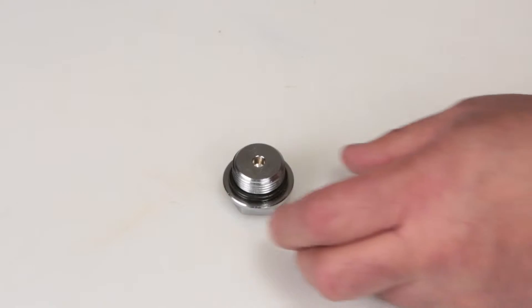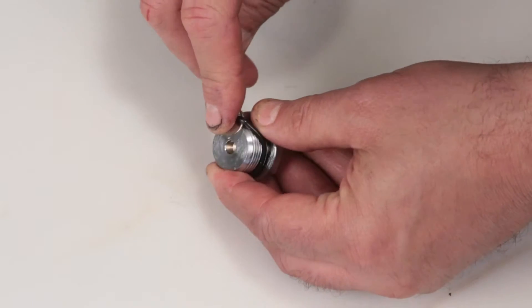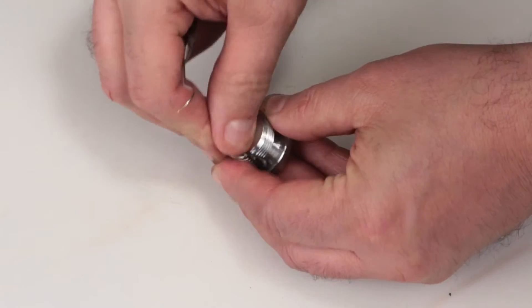Before reinstalling the valve plug, using a small screwdriver or pick, replace the O-ring provided in the valve kit.